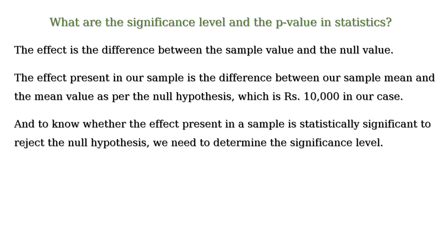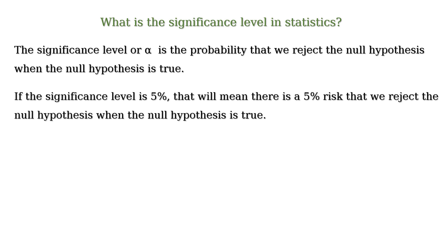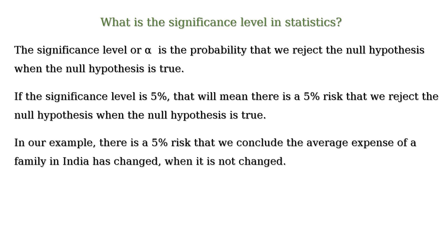To know whether the effect present in a sample is statistically significant enough to reject the null hypothesis, we need to determine the significance level. The significance level, or alpha, is the probability that we reject the null hypothesis when the null hypothesis is true. So if the significance level is 5%, that means there is a 5% risk that we reject the null hypothesis when it is true — in our example, a 5% risk that we conclude the average expense has changed when it has not.